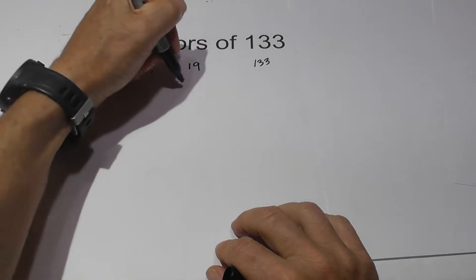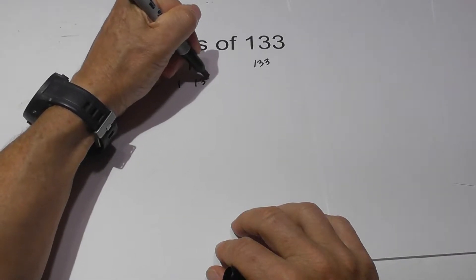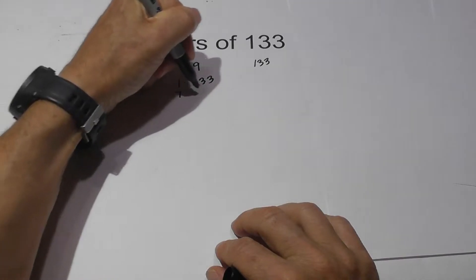And that's it. So in pairs, 1 times 133, 7 times 19.